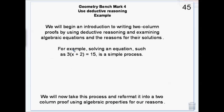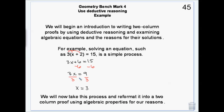Let's solve an equation and turn it into a proof. Starting with 3(x plus 2) equals 15: first we distribute the 3 to get 3x plus 6 equals 15. Then we subtract 6 from both sides to get 3x equals 9. Then we divide both sides by 3 to get x equals 3. We've concluded that x equals 3 based on mathematical facts — we're allowed to distribute, subtract, and divide.